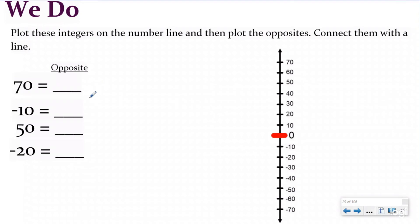So our first one is going to be 70. Now, if you look right here, our interval is going to be 10. So we're going to count up because our positive numbers are up. Negative numbers are down. And so we're going to have 70 here. Our opposite would be negative 70. So I'm going to plot that right there. And I'm just going to connect it with a line.